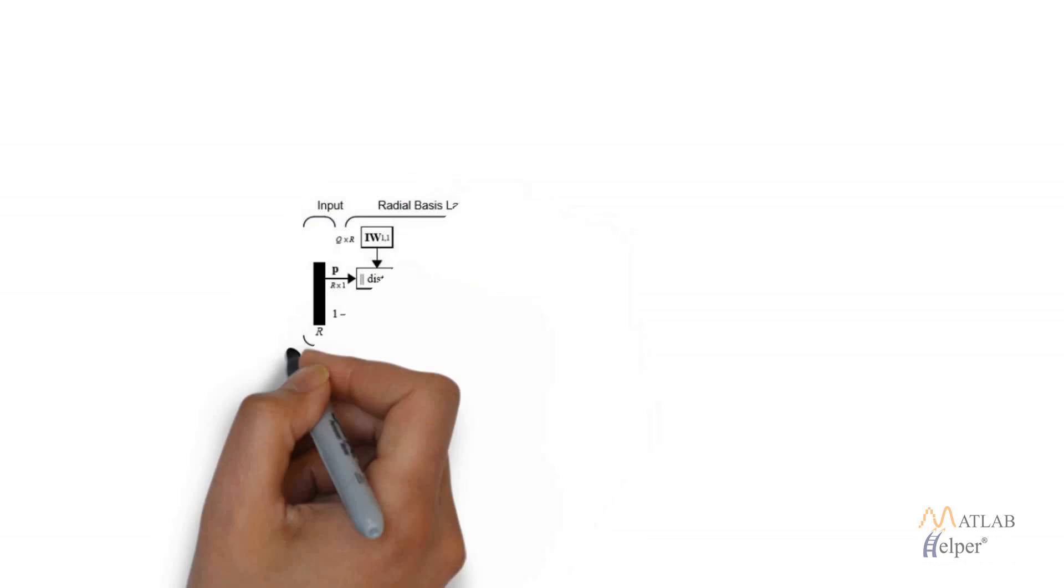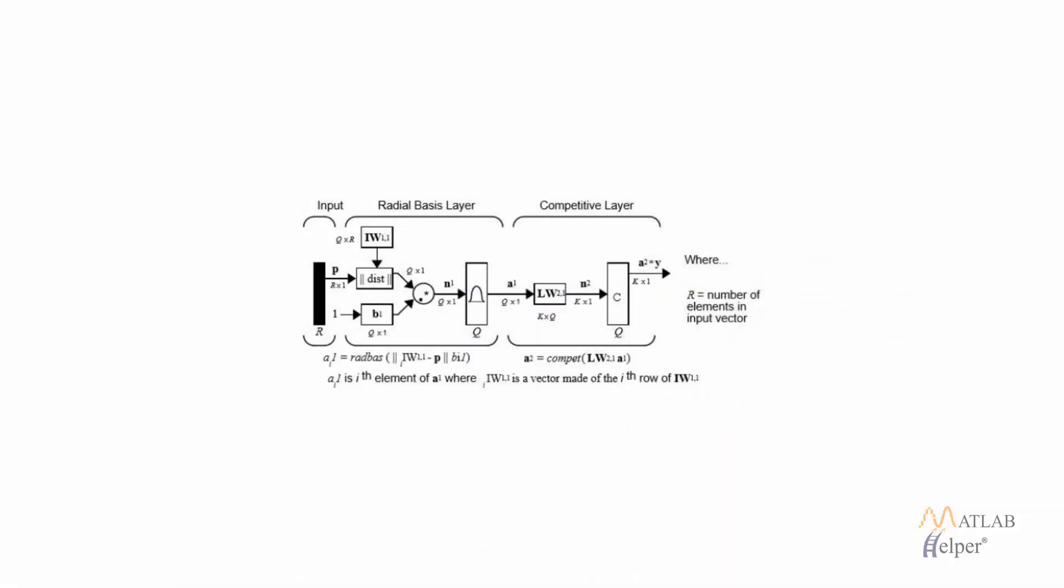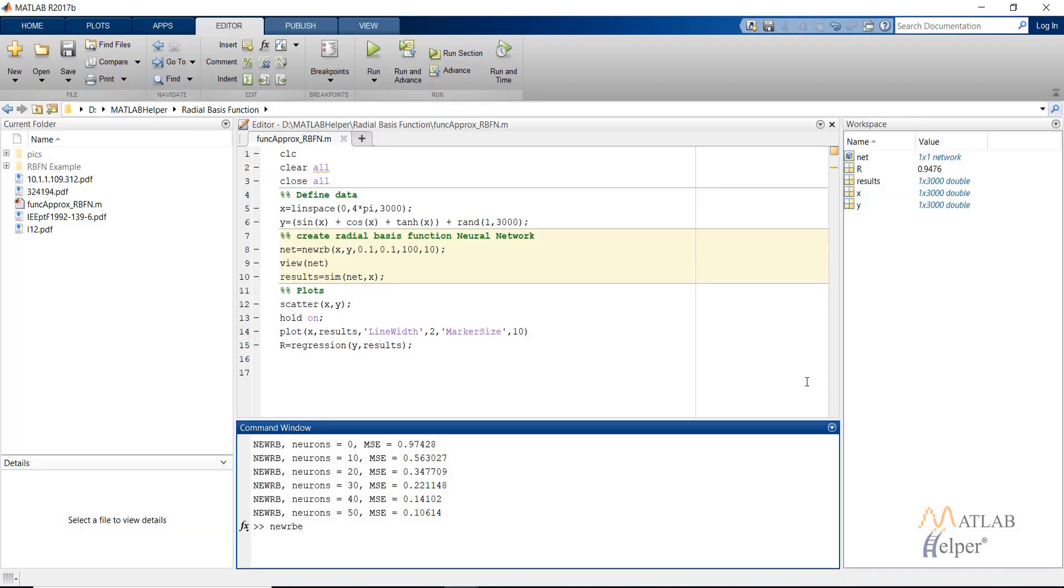Then we also have the probabilistic neural network, the figure of which is shown on the screen. In this case, instead of the linear layer we have a competitive layer. You can find more about these neural networks by consulting the neural network documentation in MATLAB. That's it everyone. Hope you liked it. Please like, subscribe, and share. Thanks for watching.